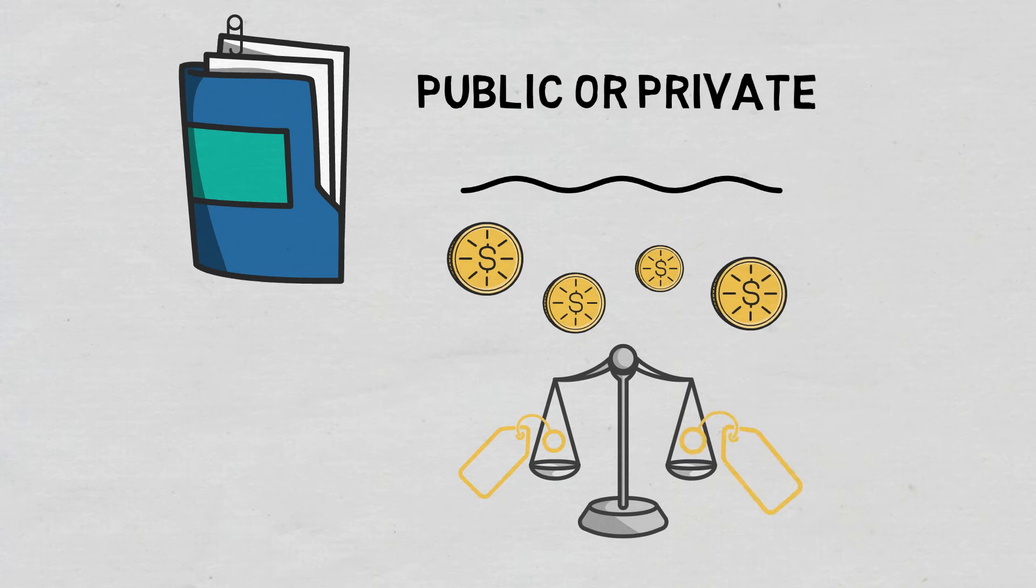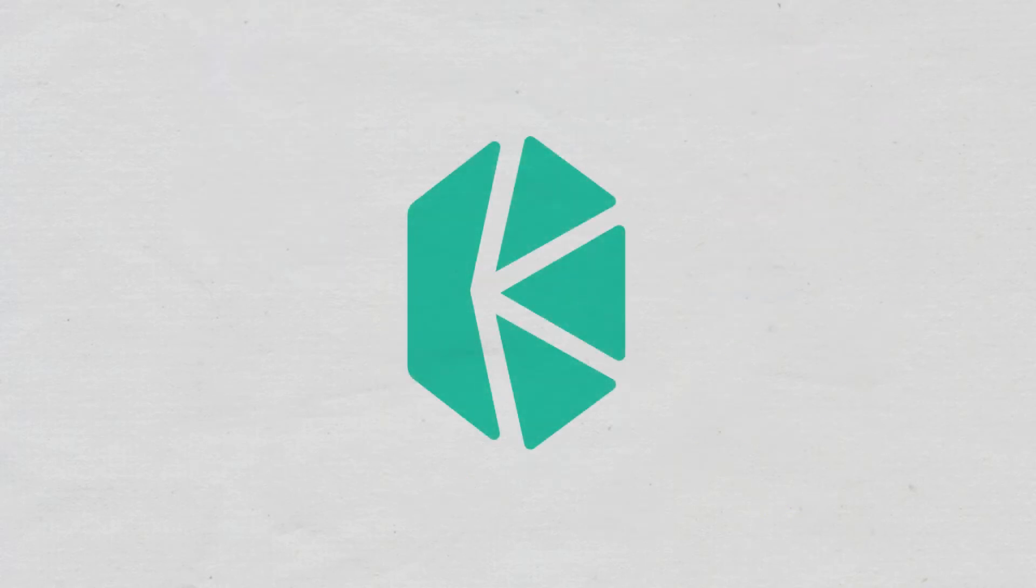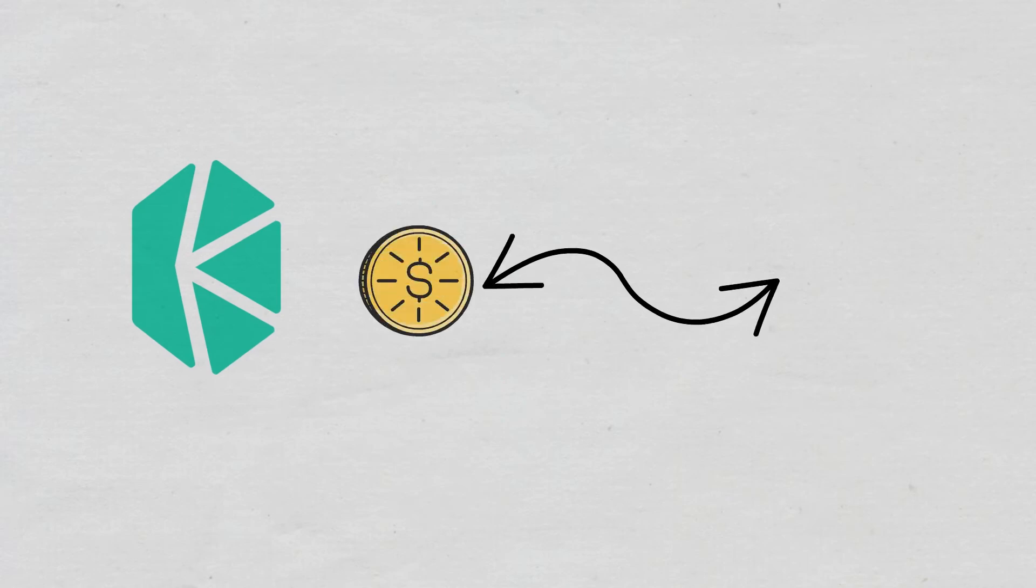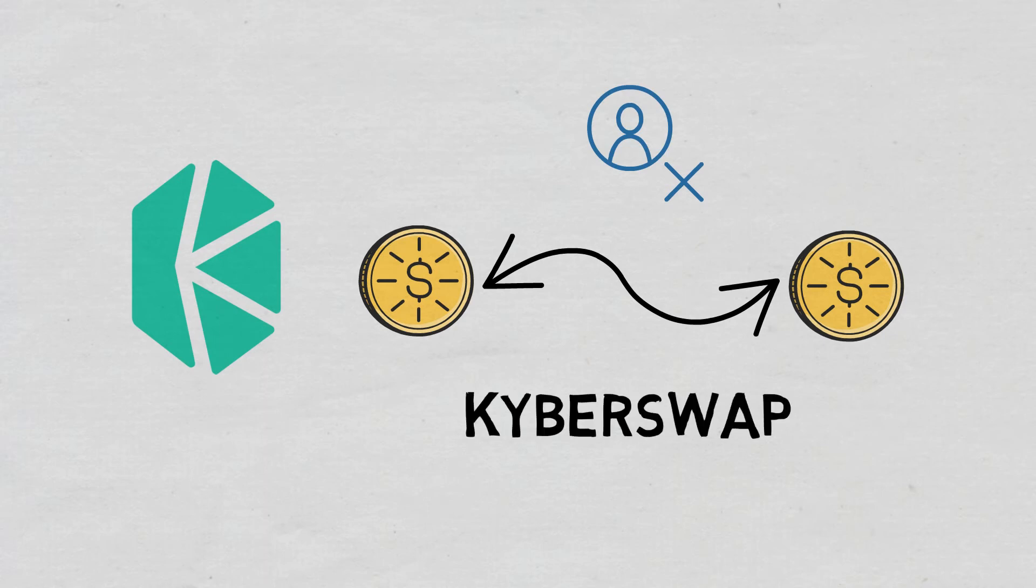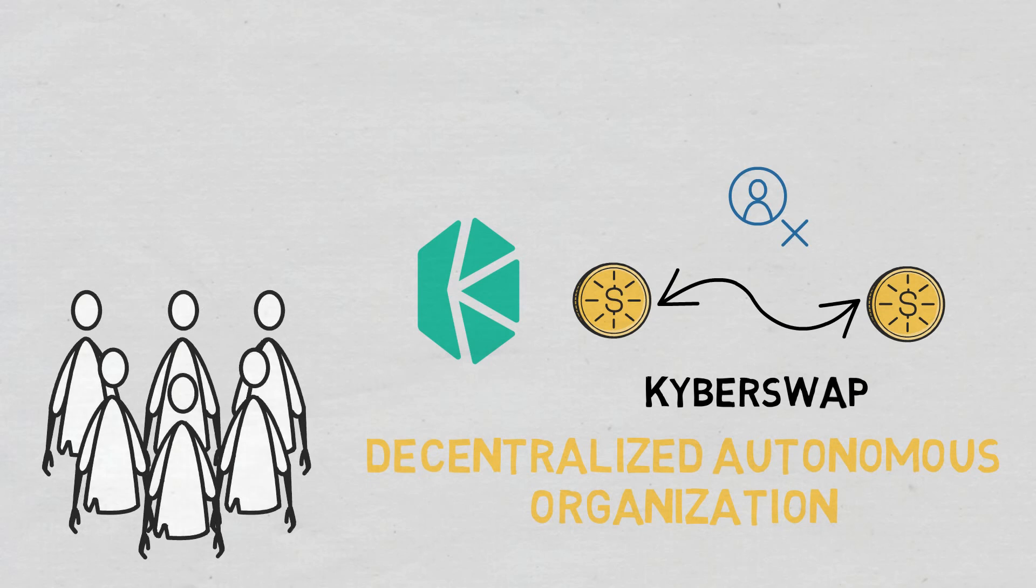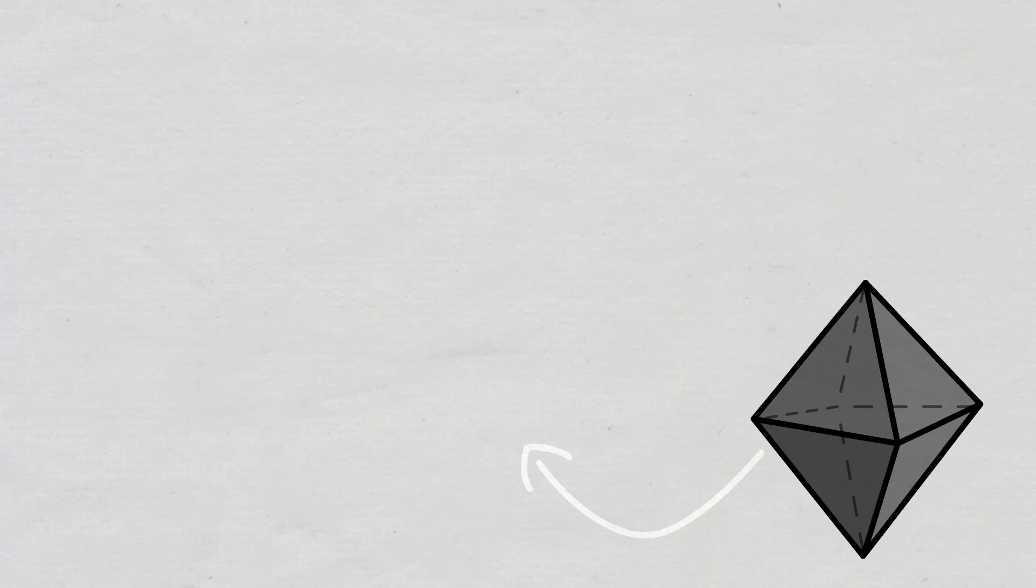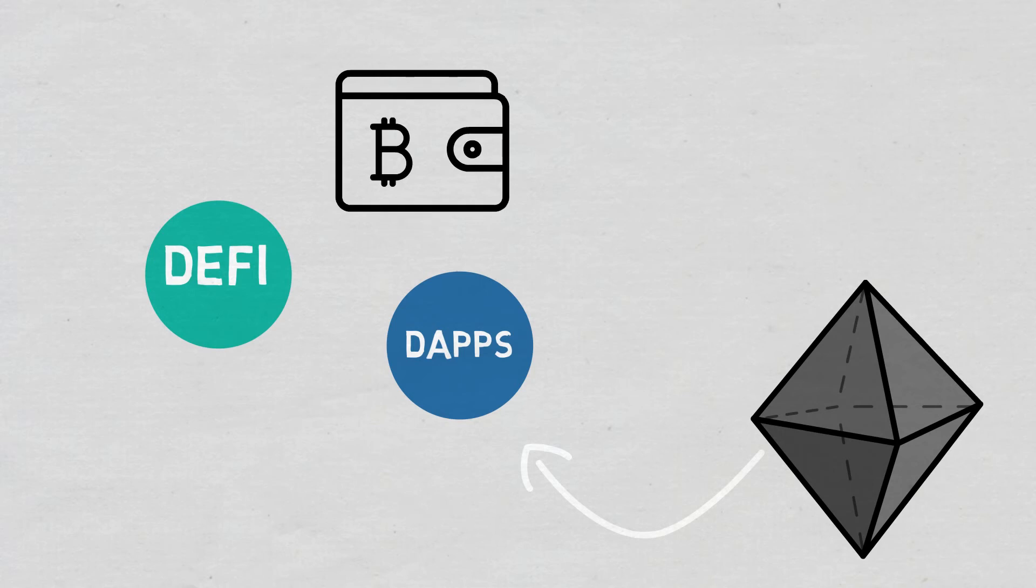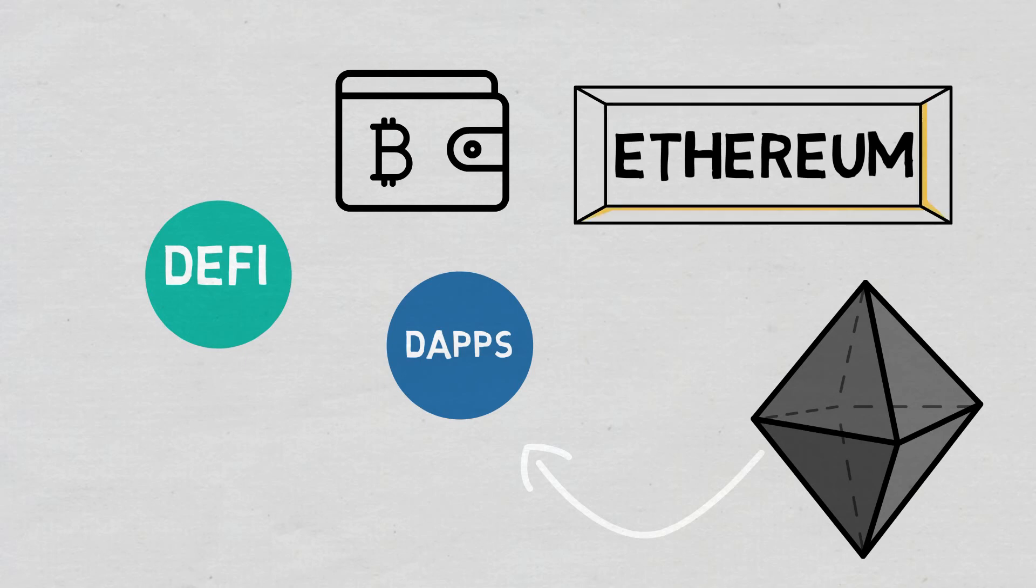Kyber Network. Like any AMM, this is a decentralized protocol that allows the exchange of tokens without intermediaries based on KyberSwap, its exchange. It is based on a decentralized autonomous organization, KyberDAO, made up of holders of its native token, KNC or Kyber Network Crystal. It can be integrated with dApps, DeFi platforms and crypto wallets and although it can be implemented on any blockchain, it works on Ethereum starting in December 2020.